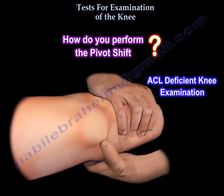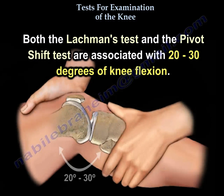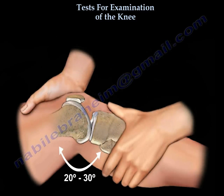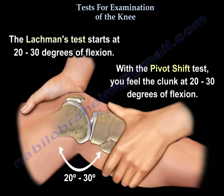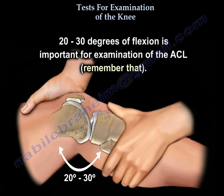Both the Lachman test and the pivot shift test are associated with 20 to 30 degrees of knee flexion. The Lachman test starts at 20 to 30 degrees of flexion, and with the pivot shift you feel the clunk at 20 to 30 degrees of flexion. Remember that 20 to 30 degrees of flexion is important for examination of the ACL.